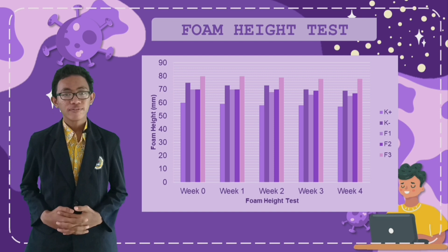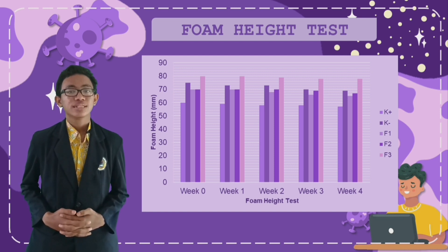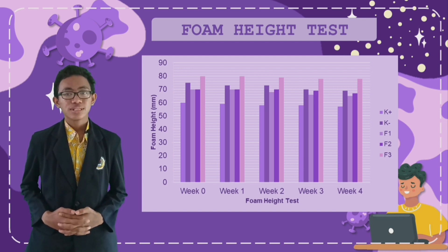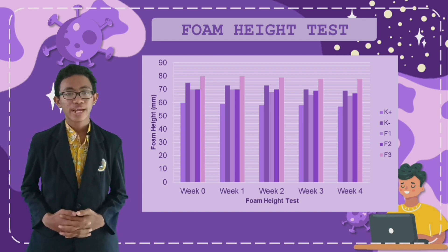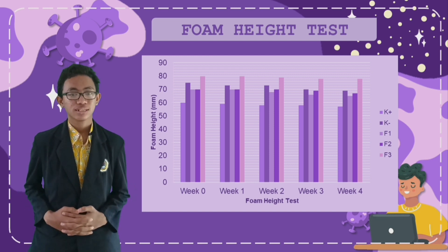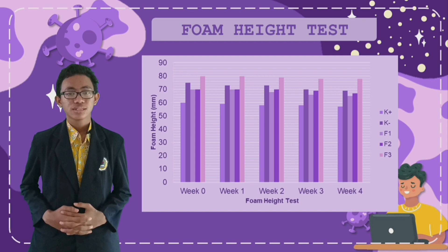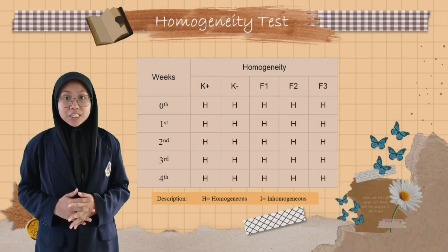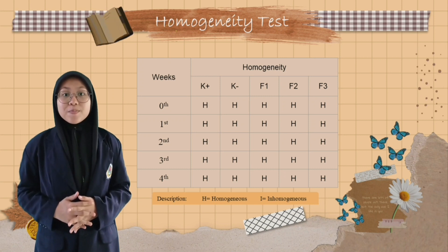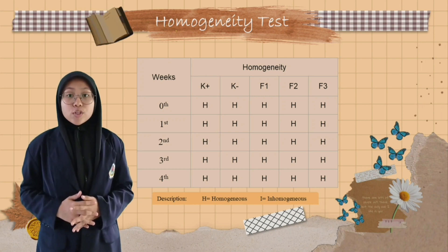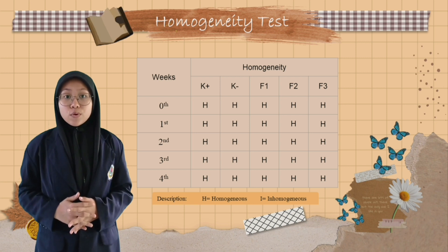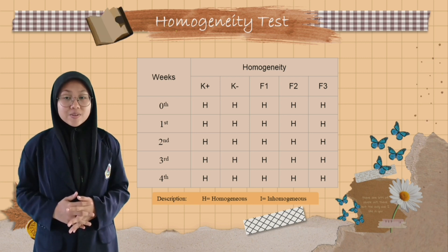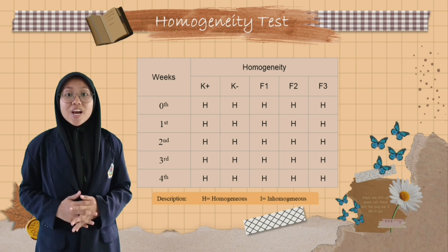The foam height test was carried out to see the strength of the foam produced by the liquid soap. The test results showed that until 4 weeks, all formulation foam heights met the requirement of the Indonesian National Standard, which is 13 to 220 mm. The homogeneity test aims to see the presence or absence of granules in the preparation. The results of the homogeneity test until the 4th week showed that all formulations keep no granules, so they can be said to be homogeneous.